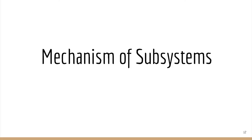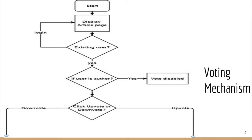Our system consists of three main subsystems. The first is the voting mechanism, which we will explain using a flowchart. The voting mechanism explains how reputation changes by upvote or downvote of a particular article.